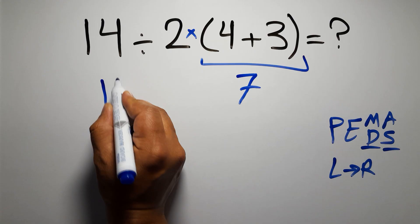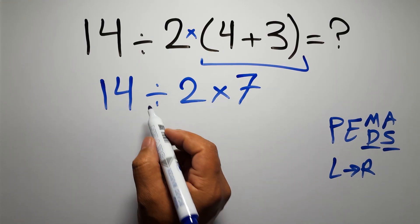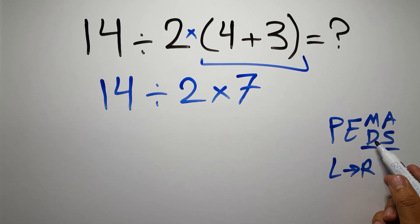So 14 divided by 2 times 7. Now we have one division and one multiplication. As I said, multiplication and division have equal priority, and we have to work from left to right.